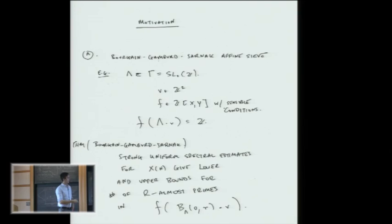I get some subset of integers. And then the theorem, I put this loosely, but the theorem of Bourgain-Gamburd-Sarnak, is that if you have strong uniform spectral estimates for the covering spaces, you get lower and upper bounds for the number of r almost primes in this orbit. So what's here? This is a ball of radius r around the identity inside lambda. So you take some ball inside your group and you see what polynomial values you get on this ball.